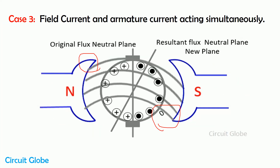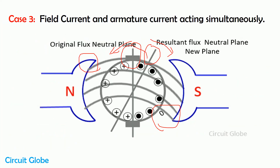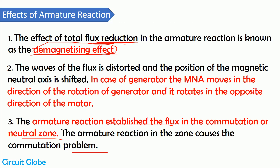Because of armature reaction, the magnetic neutral axis of the machine may get shifted. This magnetic neutral axis turns in the direction of machine rotation in case of a generator, and in the opposite direction in case of a motor. Also, the armature reaction establishes flux in the commutation or neutral zone of the machine. Since there is no EMF in the neutral zone and we place brushes there, the flux induced by armature reaction in that axis means the brushes may get damaged. These are the main effects of armature reaction on the machines.